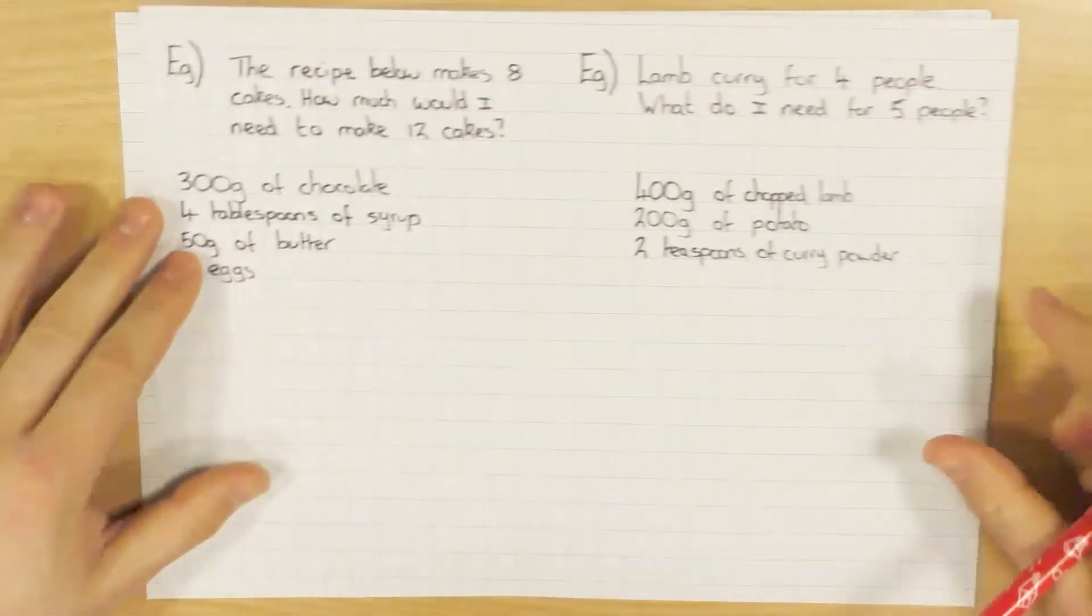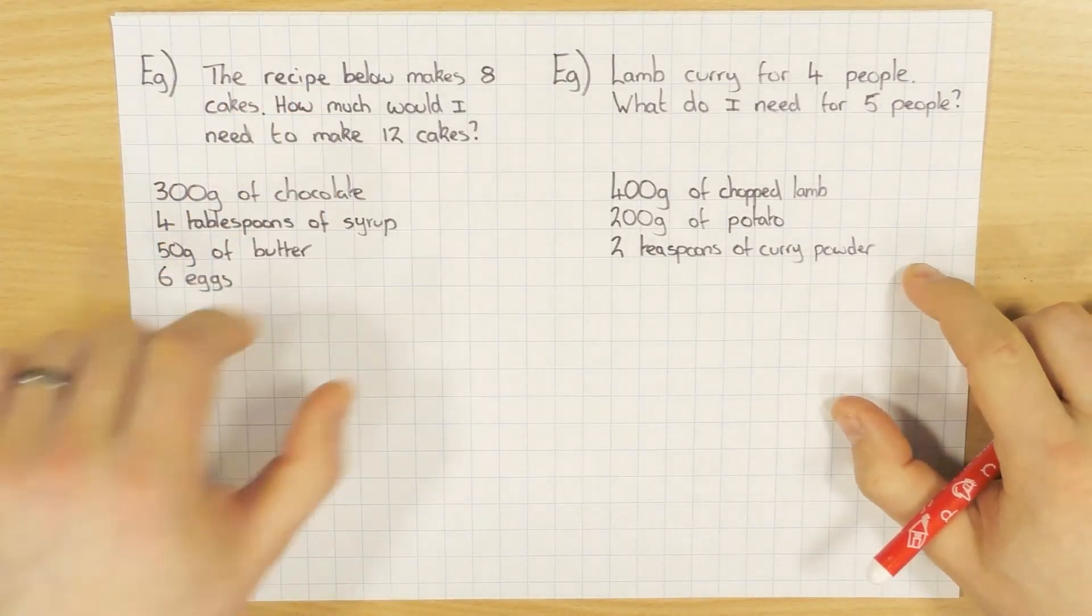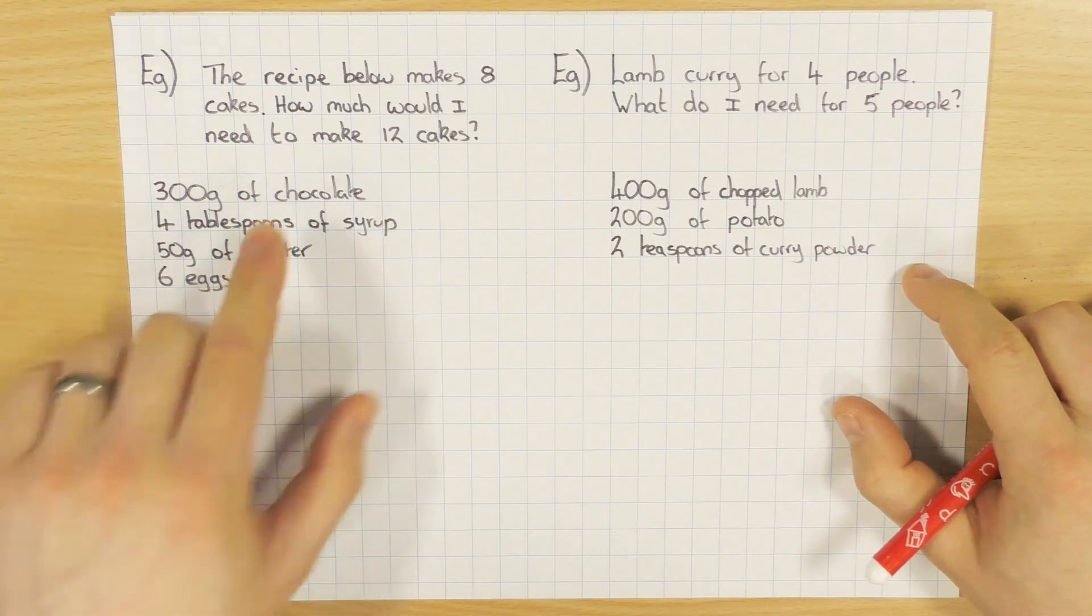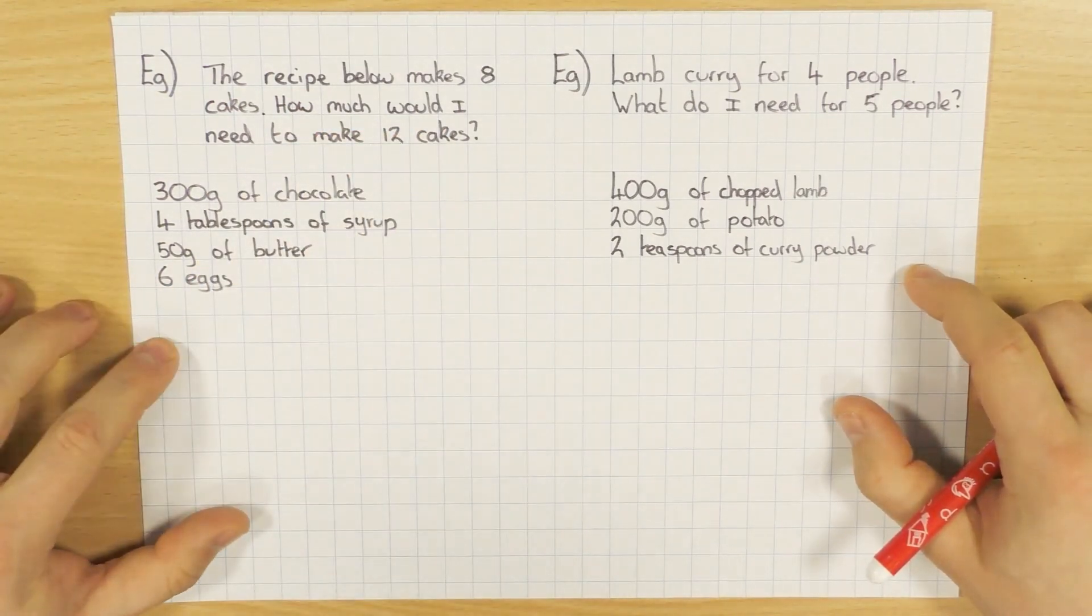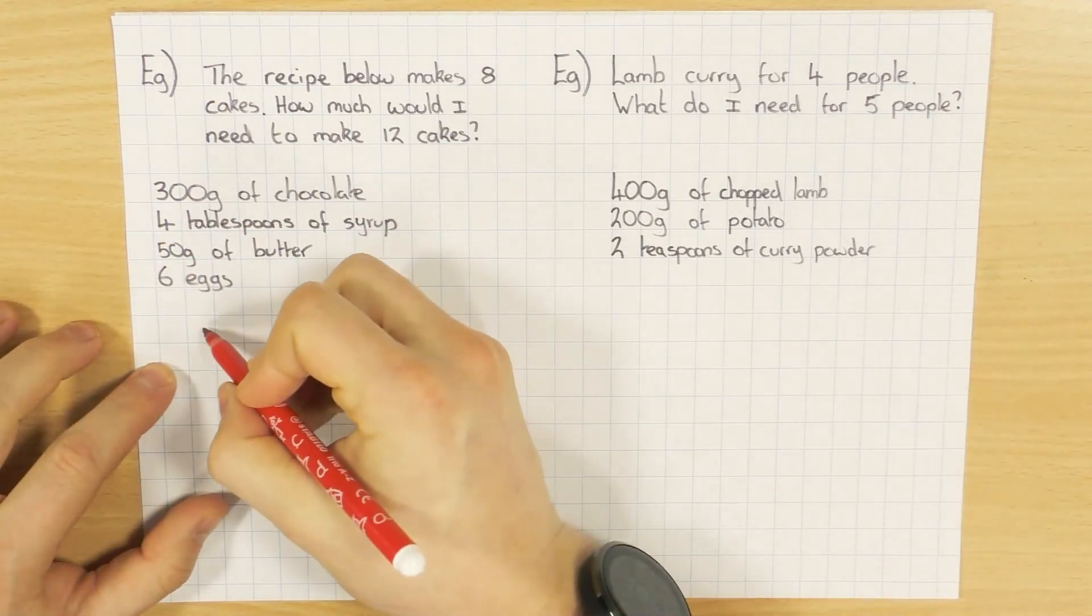And one last thing to have a quick chat about, which is recipes. So recipes tend to be easy. So if we have a look at this one, the recipe below makes eight cakes. How much would I need to make 12 cakes? So if this one here makes eight cakes.